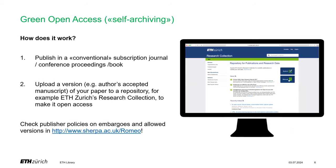For articles published in subscription journals, there is another type of open access called green open access, also referred to as self-archiving. Self-archiving means you publish an article in a conventional journal and additionally upload an open access version to a so-called repository. Our institutional repository at ETH is the Research Collection. It's important to note that due to your publishing agreement with the journal publisher, you need to follow the publisher's regulations on green open access. These regulations mandate, for example, certain embargo times and also regulate which article version can be uploaded. We recommend checking the Sherpa-Romeo database to find out about these publisher regulations for self-archiving.